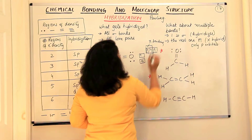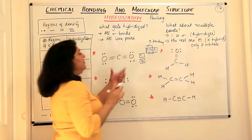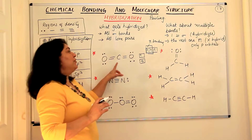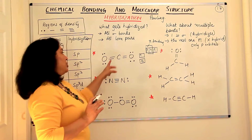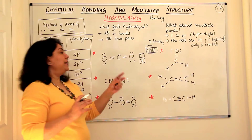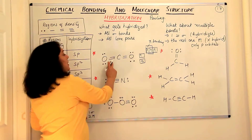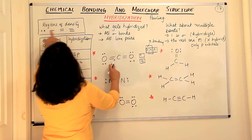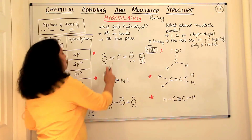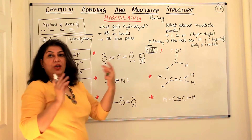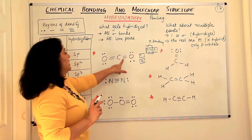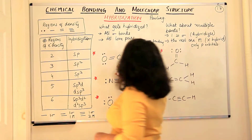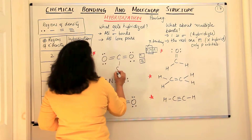One s and one p orbital get together and hybridize, giving sp hybridization. Another way to find this is by counting regions of electron density around carbon. Each double bond counts as one region of density, so carbon has two regions. When you have two regions of electron density, the hybridization is sp. So carbon in CO₂ shows sp hybridization.